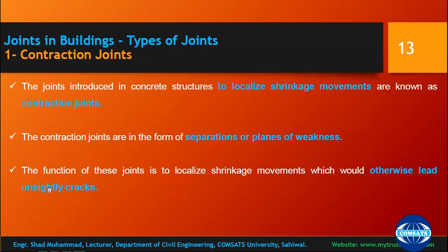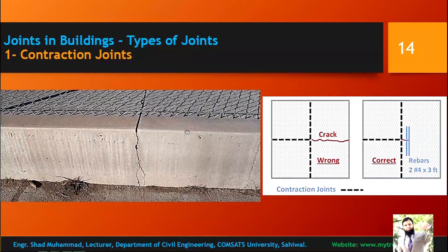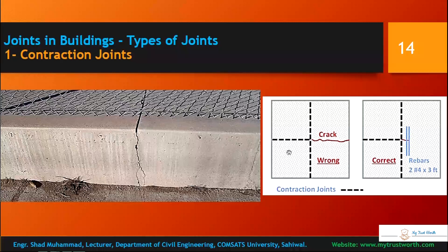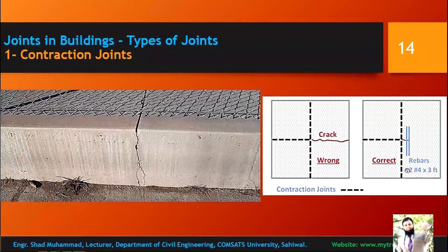The function of contraction joints is to localize shrinkage movement that would otherwise lead to unsightly, unacceptable cracks. This is shown with an RCC structure exhibiting shrinkage cracking — the member is placed on the ground and shrinkage cracks are visible. If you expect a crack to run in a certain direction and you are not providing a joint, you need to provide reinforcement — such as dowel bars — in that direction.